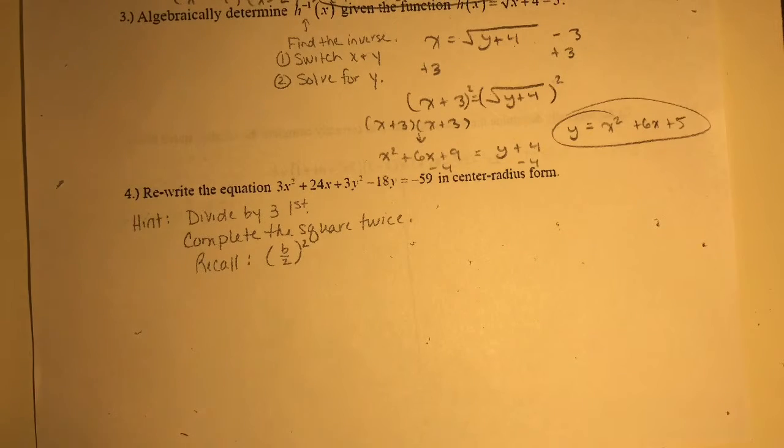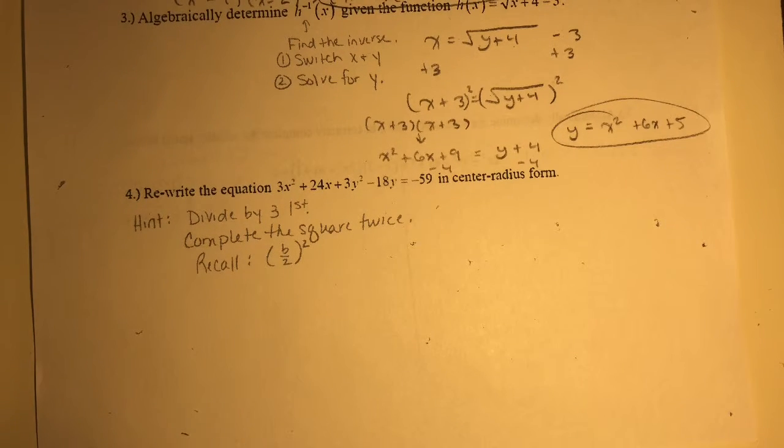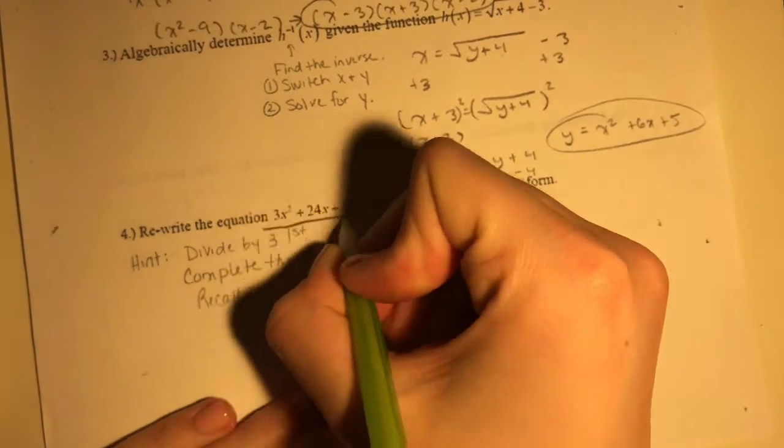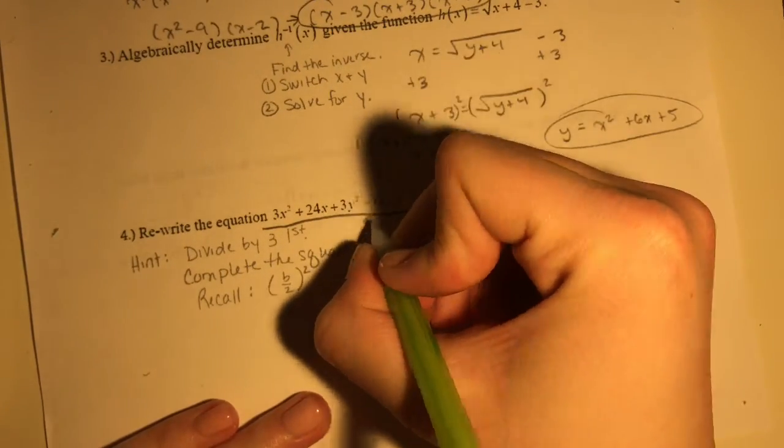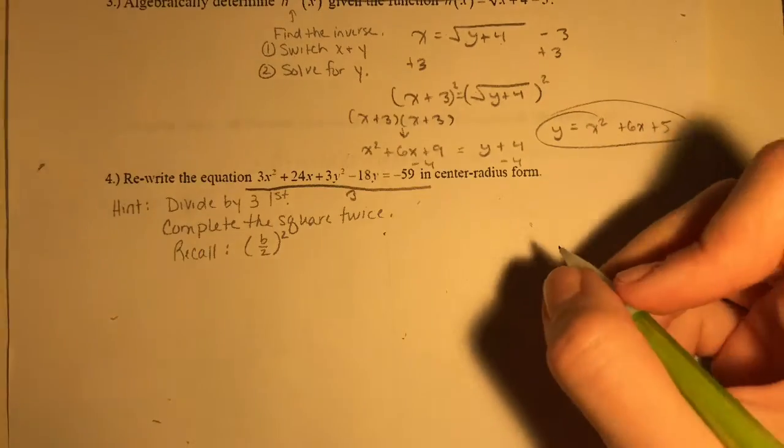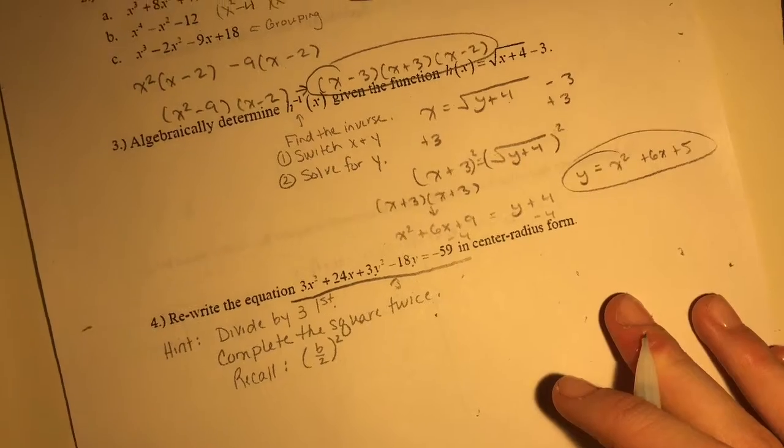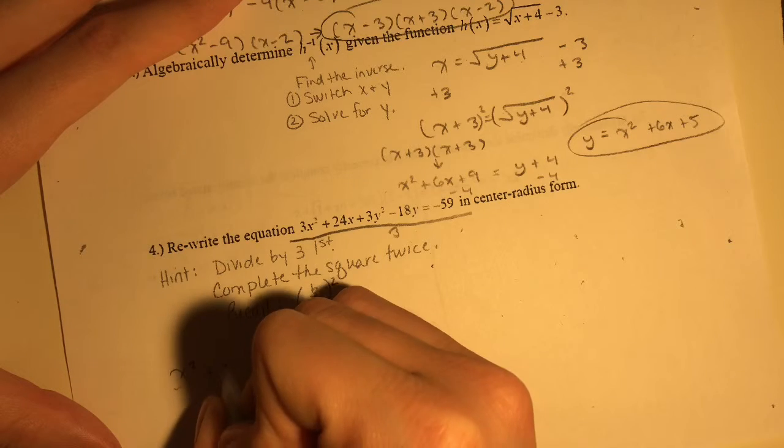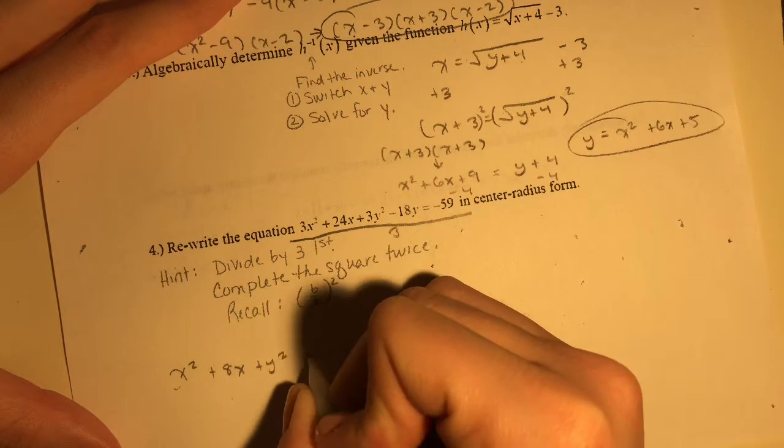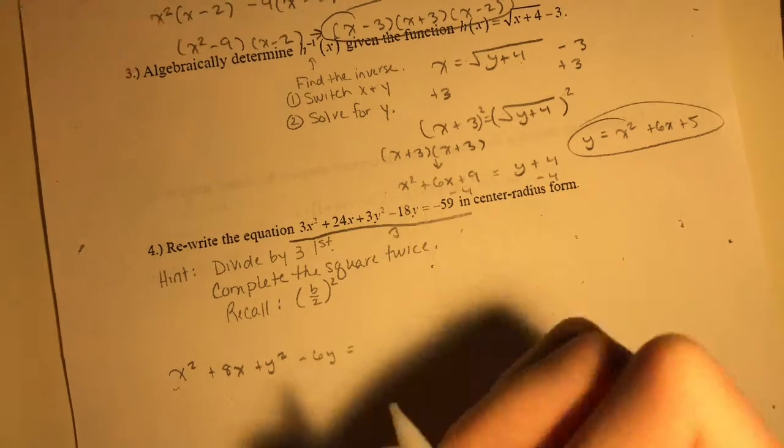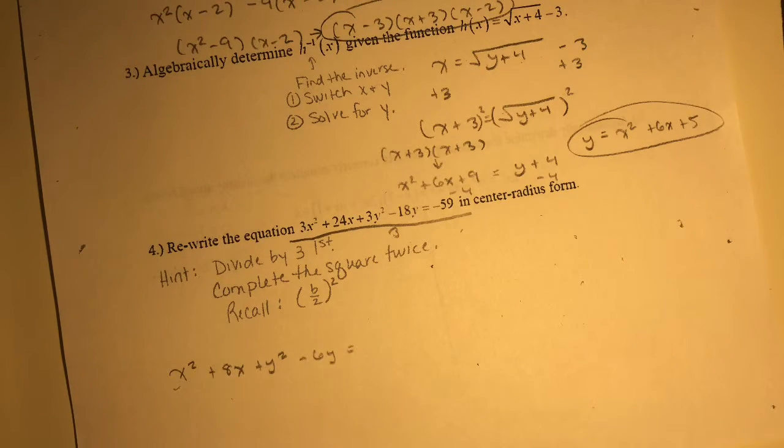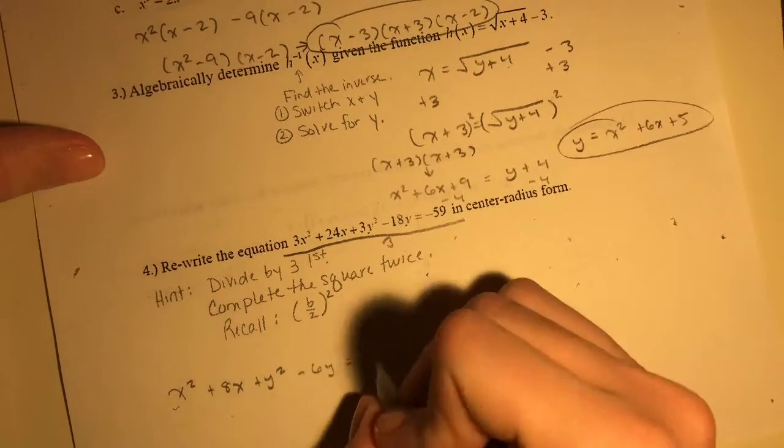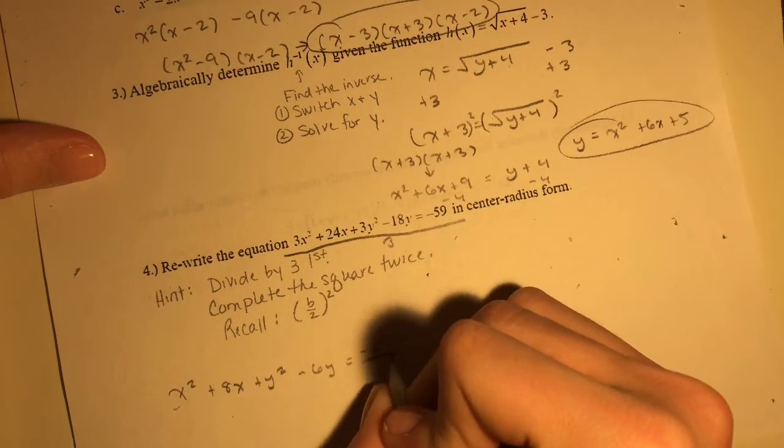Number four. Rewrite the equation 3x²+24x+3y-18y=-59 in center-radius form. Okay, so when we're talking about center-radius form, we're gonna divide by 3, which is the greatest common factor of all of it. So let's do that. We're left with... that's 8x plus... 6...